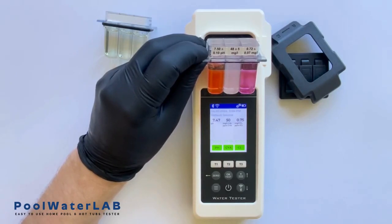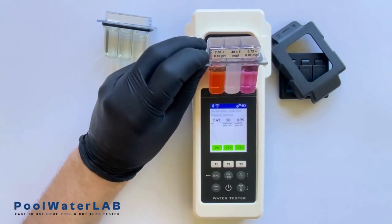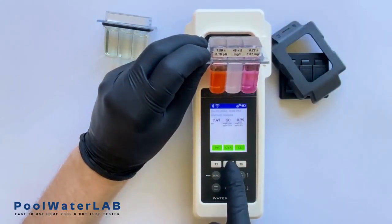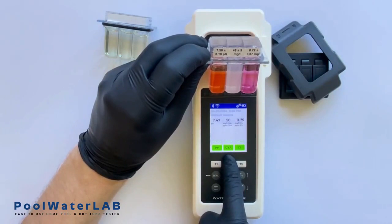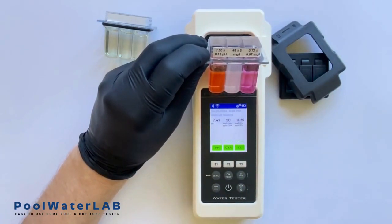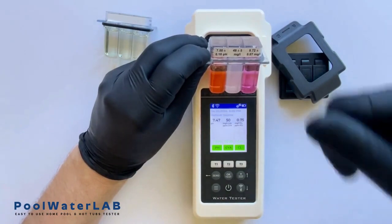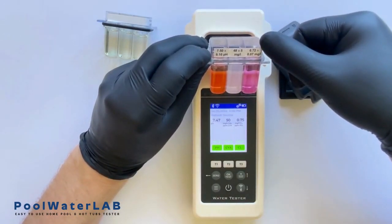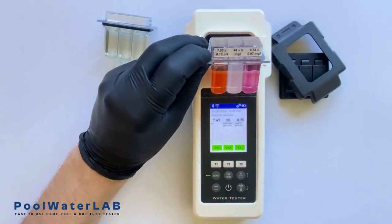The next parameter is cyanuric acid. The laboratory sample shows a value of 48, while the tester result is 50. The next parameter is free chlorine. The laboratory sample indicates a value of 0.72, and the tester shows a result of 0.75.